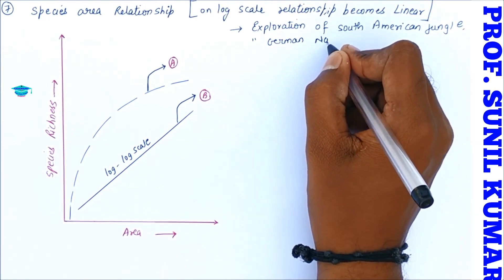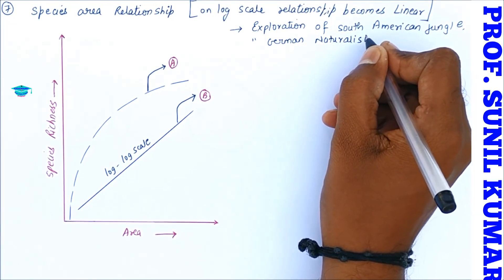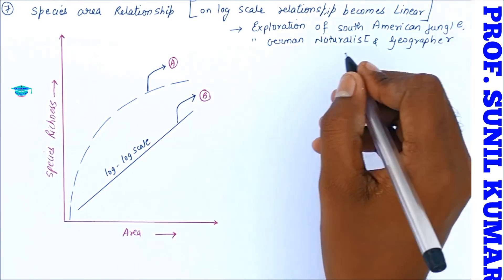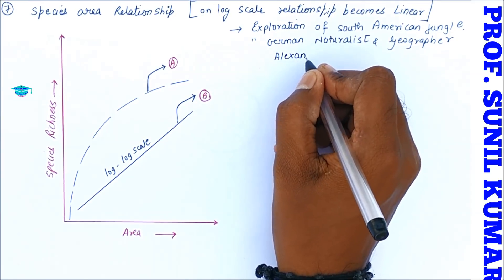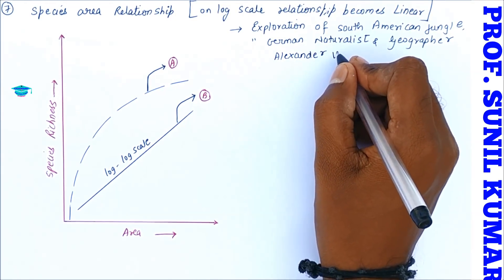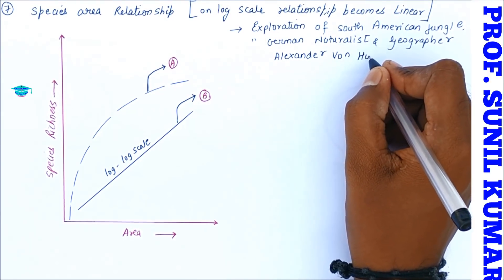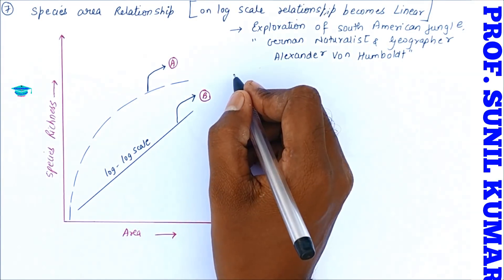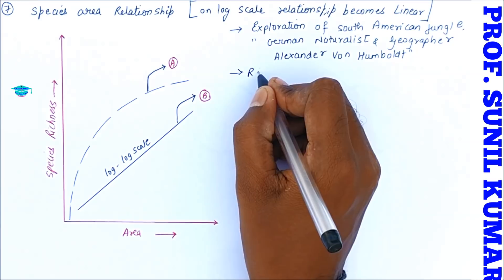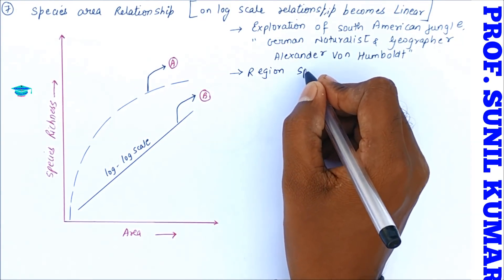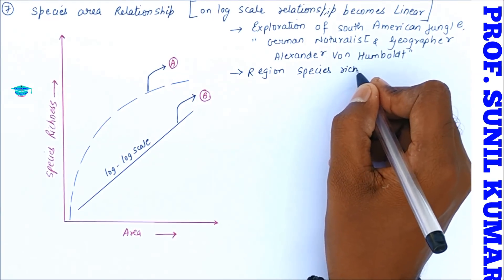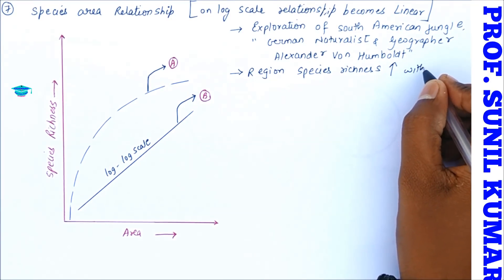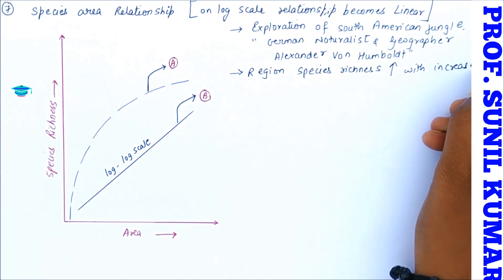Now this was explored by one of the South American jungle German naturalist and geographer, Alexander von Humboldt. He is the one who explained this species-area relationship. Now region species richness increases with increasing explored area, but only up to a limit. It means after a limit, increase in the number of species will not increase the area. So what we can understand: there has to be a balance here between the immigration and the emigration.